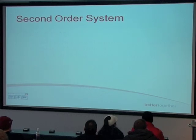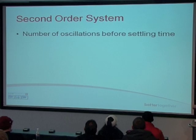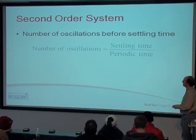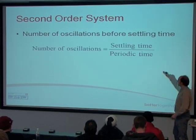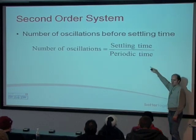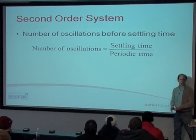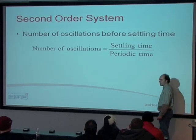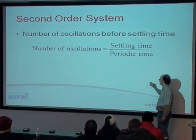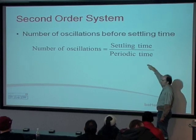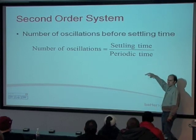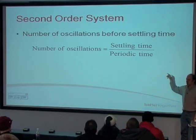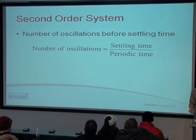Lastly, the number of oscillations before settling time: you take the settling time and divide it by the periodic time. The periodic time represents the frequency of oscillation, so settling time divided by periodic time gives you the number of oscillations — which could be some decimal number.